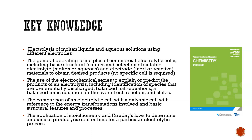We need to use the electrochemical series to predict the products of an electrolysis reaction — a critical skill that also supports our understanding of secondary cells. From that, we need to predict the half equations and overall equation for cell reactions including states, compare electrolytic and galvanic cells in terms of energy transformations, and apply stoichiometry and Faraday's laws to determine amounts of products or current.